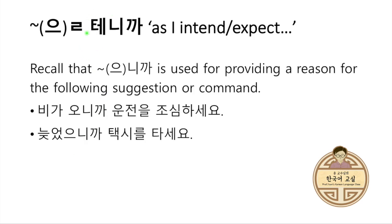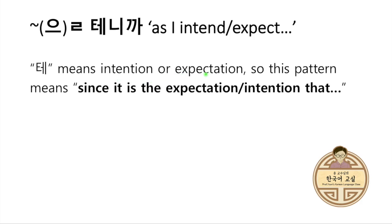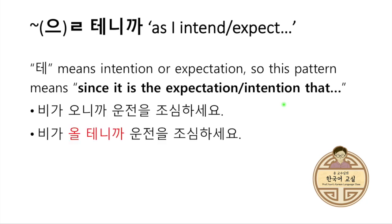자 그런데 을 테니까 — 태 is added to this pattern. Then what is 태? 태 means intention or expectation — my intention, my expectation. So this pattern means 'since it is my expectation that...' or 'it is my intention that...' For example, 비가 오니까 운전을 조심하세요 uses a known fact. But if we add 태 — 비가 올 테니까 운전을 조심하세요 — this means I expect that it will be raining, or I expect that it is raining outside, because we are not 100% sure. But my expectation is that it's going to be raining, so 운전을 조심하세요.